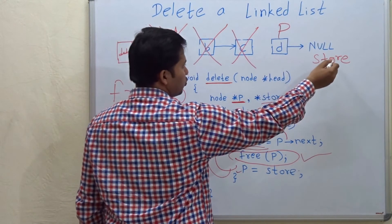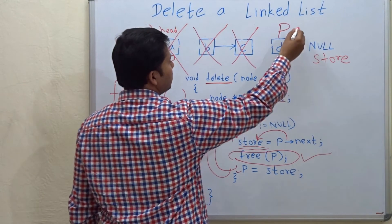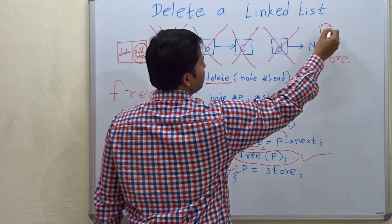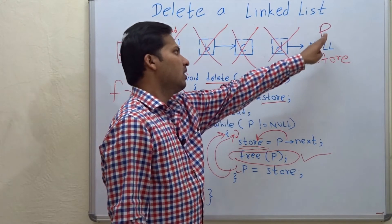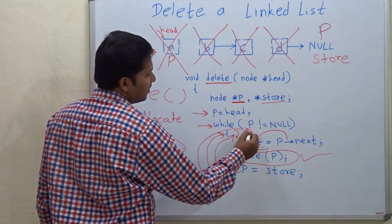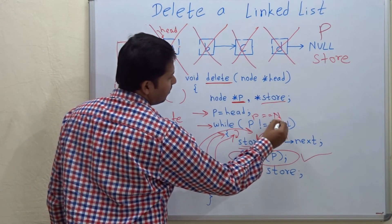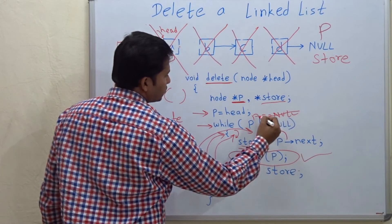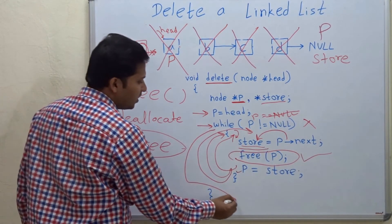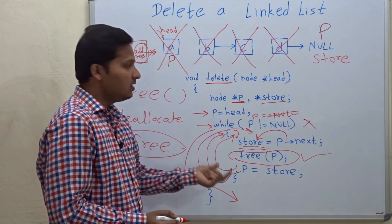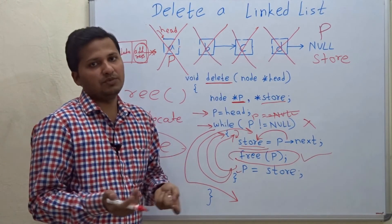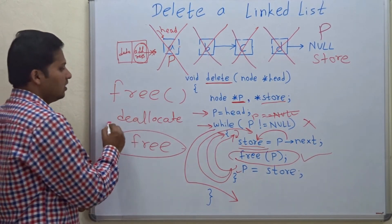After store holds the address of the next node, we delete p, and p becomes equal to store. After deleting D, p is now equal to null. At that iteration, the while condition fails, so we come out of the while loop. In this way we delete the whole linked list and free — that is, deallocate — the memory of all the nodes.